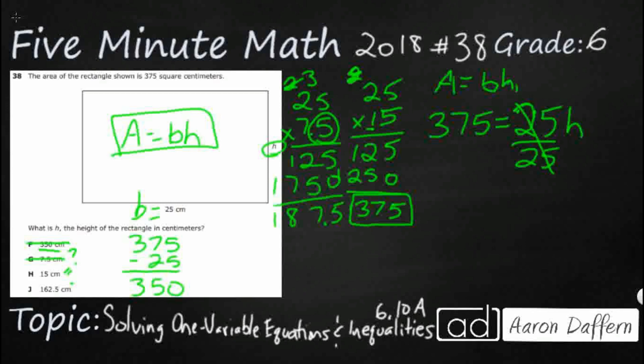And guess what 375 divided by 25 is? The answer is H.